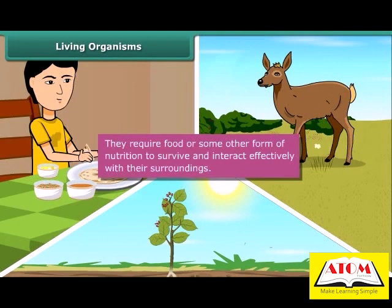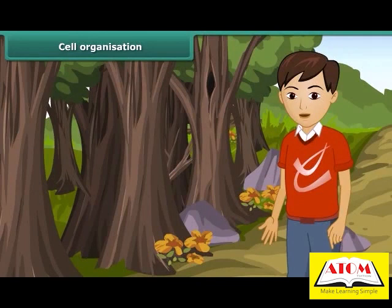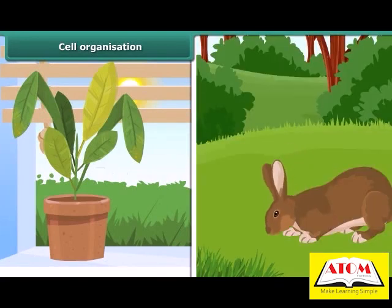They require food or some other form of nutrition to survive and interact effectively with their surroundings. Now we will study important characteristics of living organisms that differentiate them from non-living things. All living organisms, plants or animals, are comprised of cells.